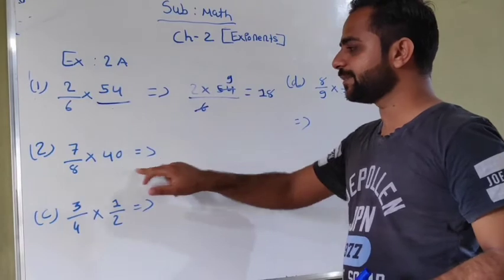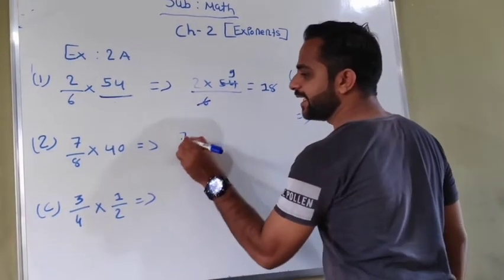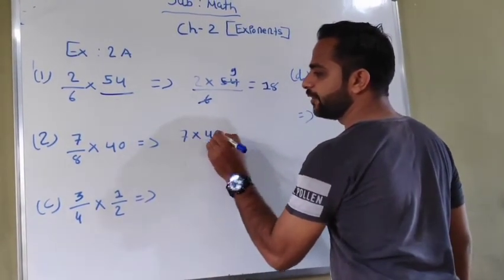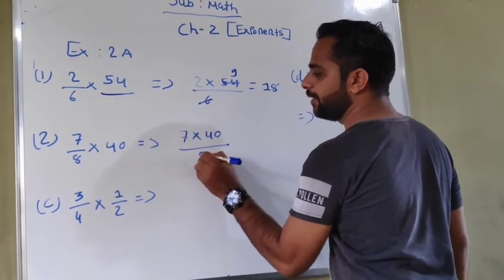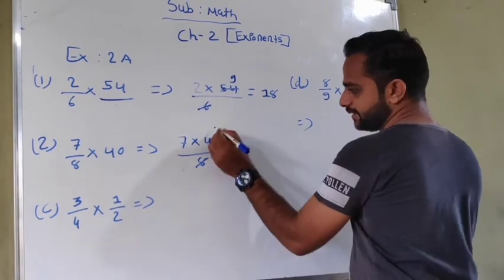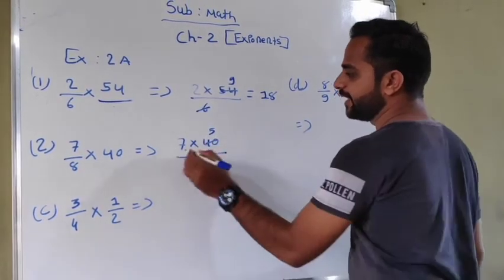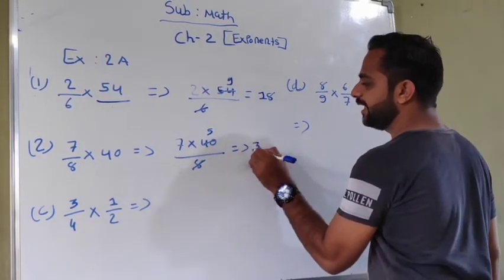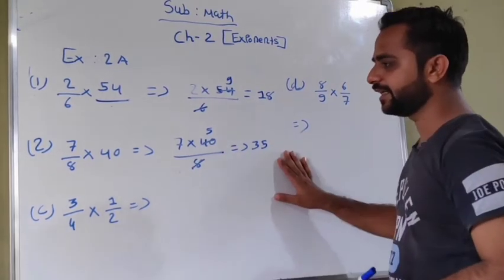Next one is 7 upon 8 multiply by 40. This one is 7 multiply by 40 upon 8. The answer will be 35.